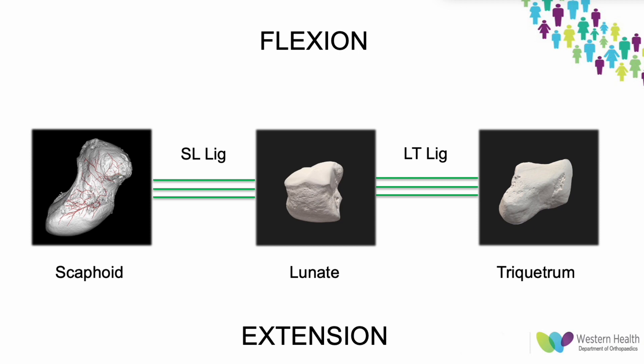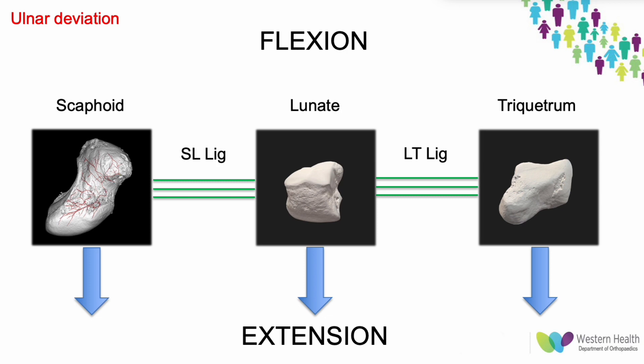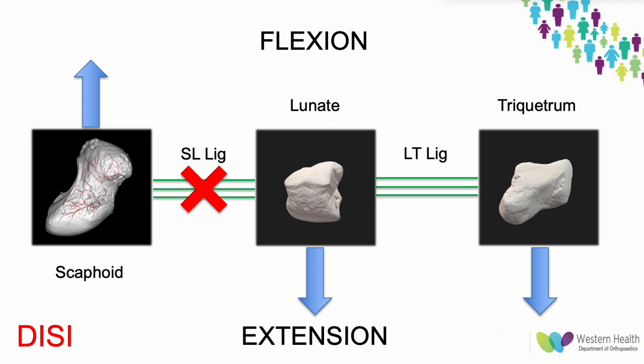In pictorial representation, the scaphoid, lunate, and triquetrum are conjoined by the scapholunate and lunotriquetral ligaments. In radial deviation or when loading the hand and wrist, the lunate tends to follow the scaphoid and the proximal carpal row flexes as a unit. In ulnar deviation, the proximal carpal row moves from a flexed to an extended position. When the scapholunate ligament is ruptured, the scaphoid flexes while the lunate extends via its lunotriquetral connection, and this is more pronounced when the wrist is loaded.